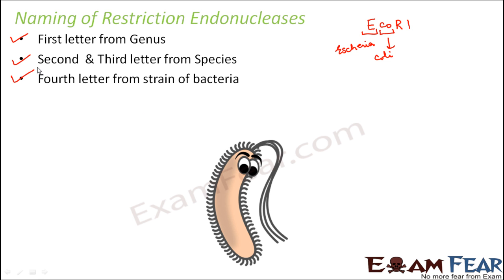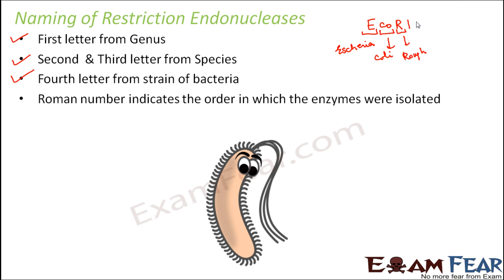The fourth letter represents the strain of the bacteria. Here you have R, which represents the rough strain of E. coli bacteria. And finally there is a Roman numeral — here it is 1 — which indicates the order in which the enzymes were isolated. This means EcoRI was the first enzyme to be isolated from E. coli.